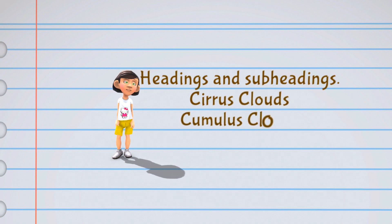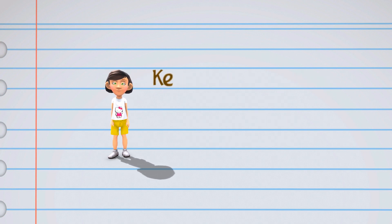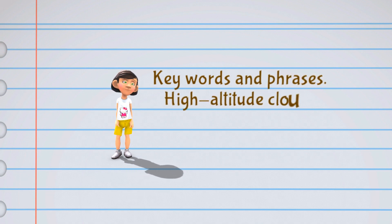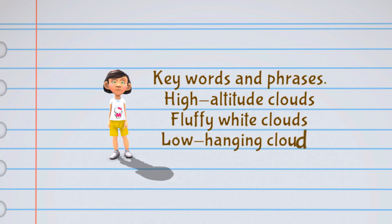The passage might have sections with headings like cirrus clouds, cumulus clouds, and stratus clouds. The passage might repeat phrases like high-altitude clouds, fluffy white clouds, and low-hanging clouds.